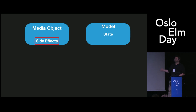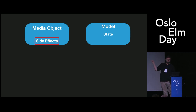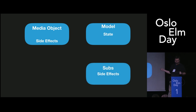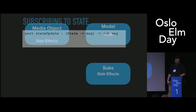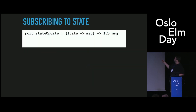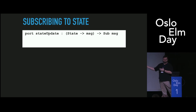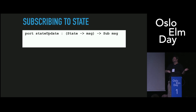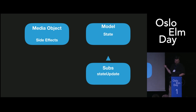Updating the state should be pretty obvious to everyone too. We have a subscription — it updates our state. So we can have a port that looks like this — this is just a wrapper around sending some JSON through. It gives us a state message and we create a subscription to it. So now we have this state update subscription, and it updates our state.